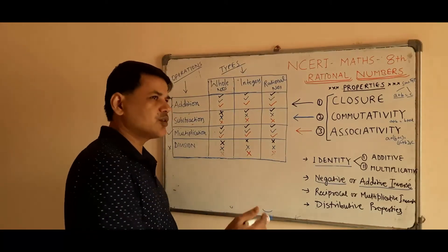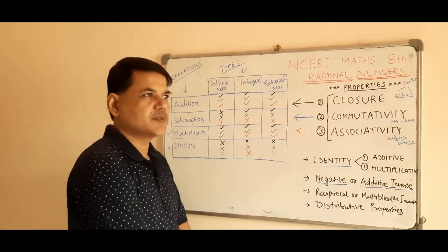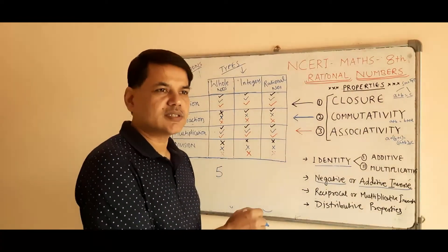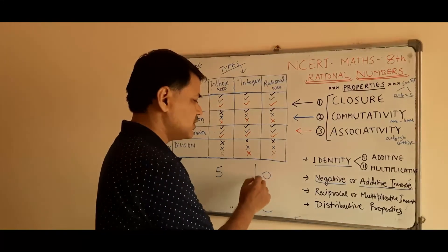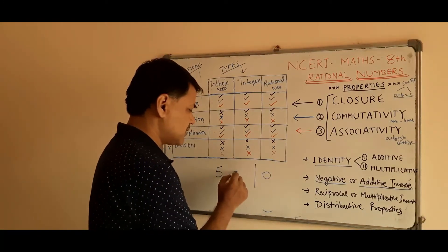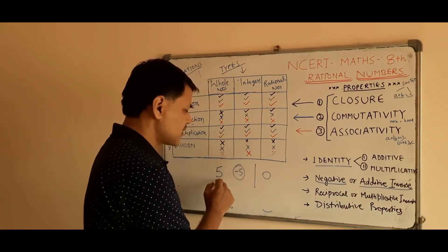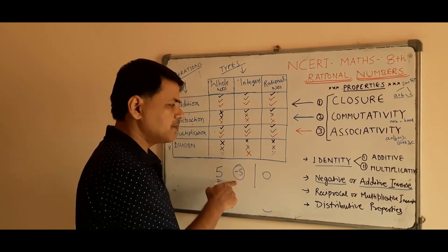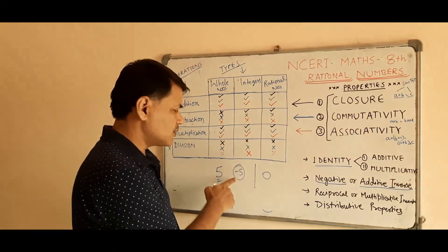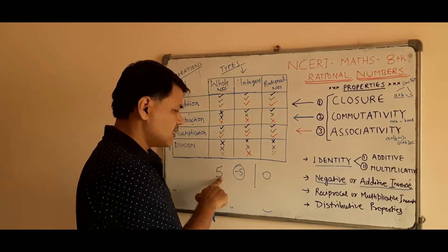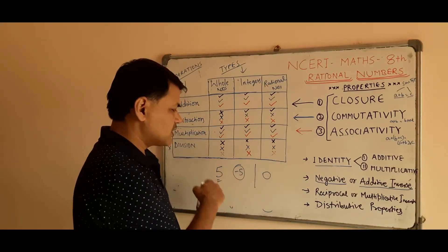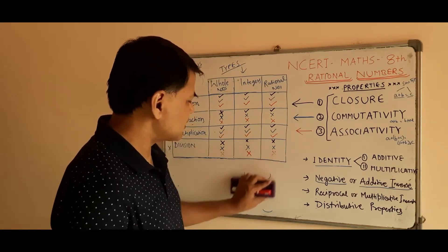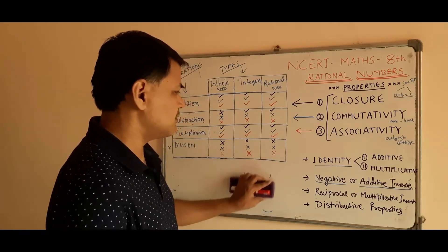Another important concept is negative, or additive inverse. Negative means the opposite of anything. Suppose we have 5 — what do we add to it so the total becomes zero? Of course, it is minus 5. So we say minus 5 is the additive inverse of 5, and vice versa — 5 is the additive inverse of minus 5.